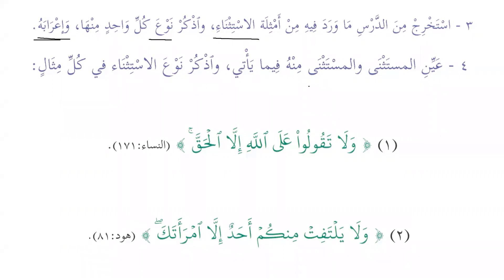The instruction says: 'Ayyin al-mustathna wal-mustathna minhu fee ma ya'ti' — identify the mustathna and mustathna minhu. 'Wadkur naw'al istithna fi kulli mithalin' — and mention the type of istithna in each example. The first is a verse of the Quran: 'Wa la taqulu alallahi illa al-haqqa' — and do not say anything about Allah except for what is the truth.